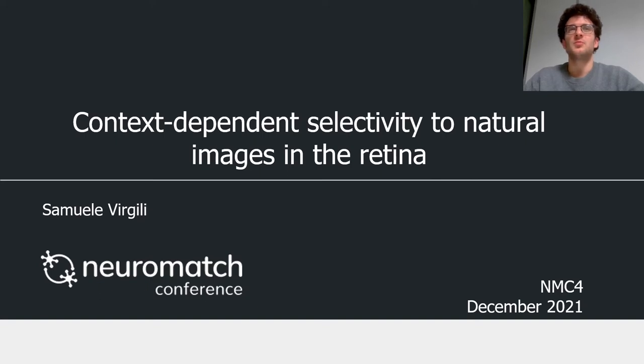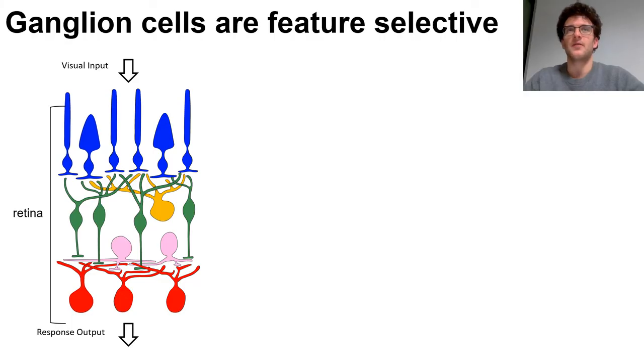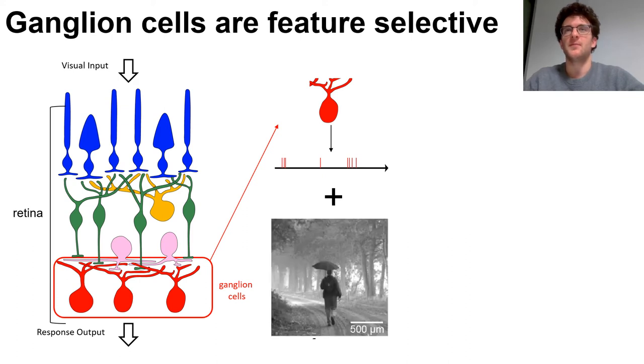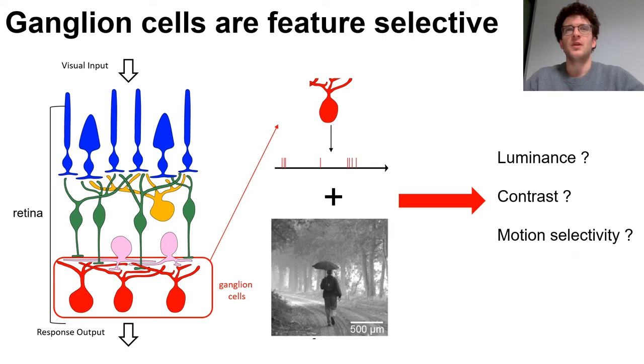In our work, we want to probe feature selectivity of retinal ganglion cells in the context of natural scenes. From the retina, we record ganglion cells and we present them with natural images. Given a neuron, we would like to know what feature it extracts from the image.